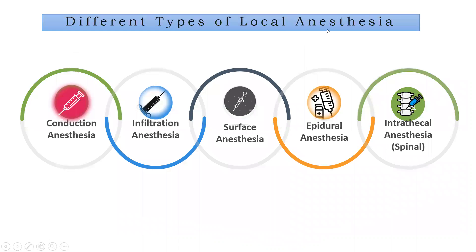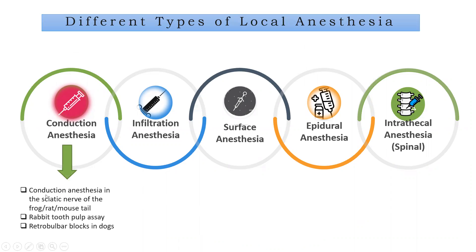There are different preclinical methods available for local anesthetic agents. The first type is conduction anesthesia, which includes methods such as conduction anesthesia in the sciatic nerve of the frog — you can use a frog, rat, or mouse tail for the same experiment. Other methods include the rabbit tooth pulp assay and retrobulbar block in dogs.